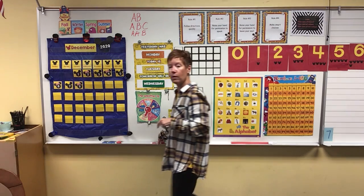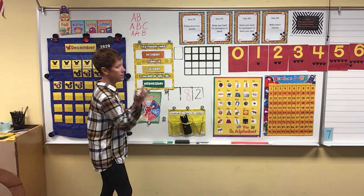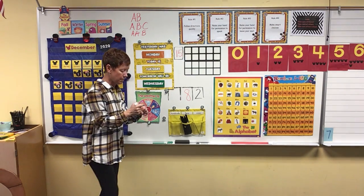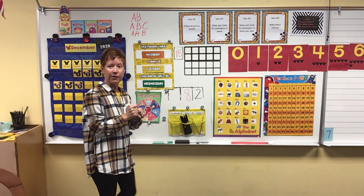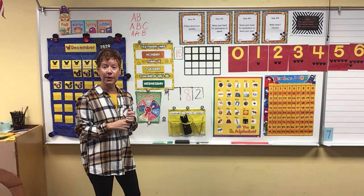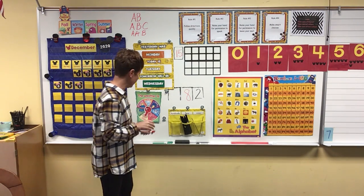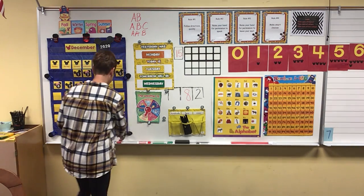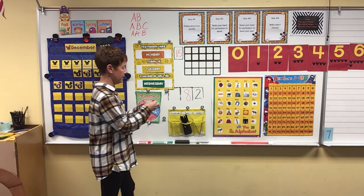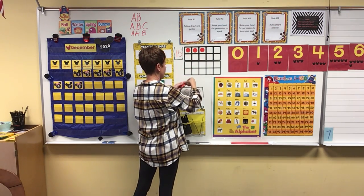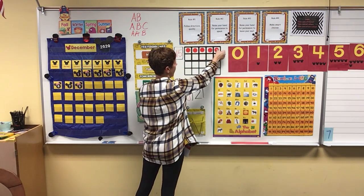I'm gonna keep us going with teen numbers. Let's do this number. What number did I just write friends? A one with a five is number 15. Very good. So let's build it in our ten frames. One, two, three, four, five.